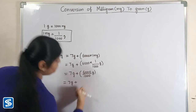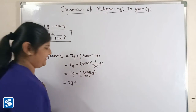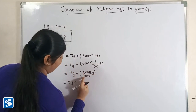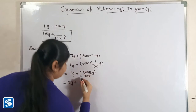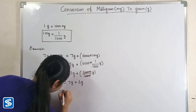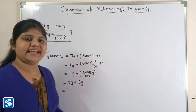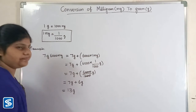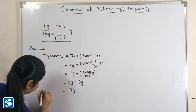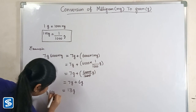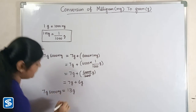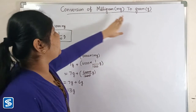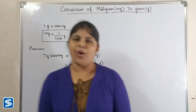Here the zeros cancel out, so 6,000 divided by 1,000 grams will be 6 grams. Then 7 grams plus 6 grams will be 13 grams. So 7 grams 6,000 milligrams is equal to 13 grams. Hope you friends all understood how to convert milligrams into grams.